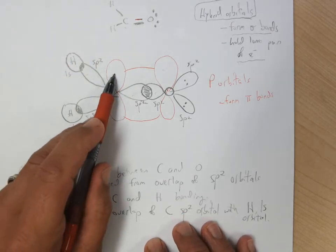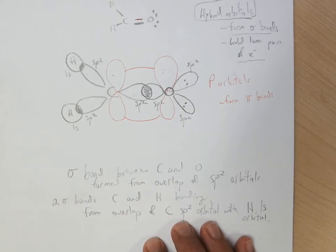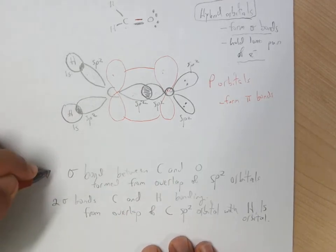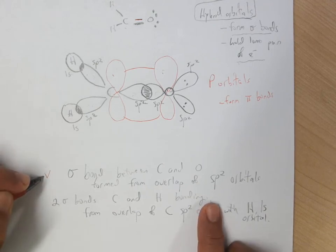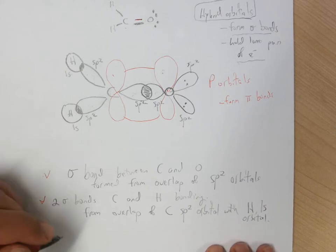but when you get the carbon close to the oxygen, then these parallel p-orbitals form the pi bond. So we have four bonds in the molecule, a sigma bond between the carbon and oxygen from the SP2 orbitals,